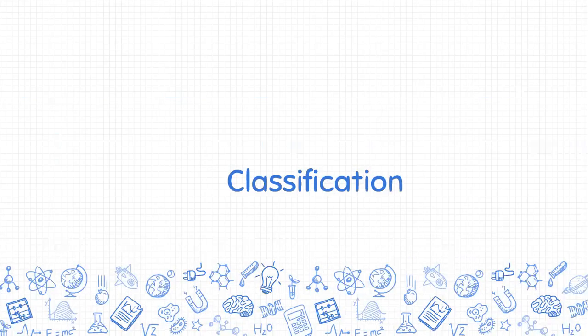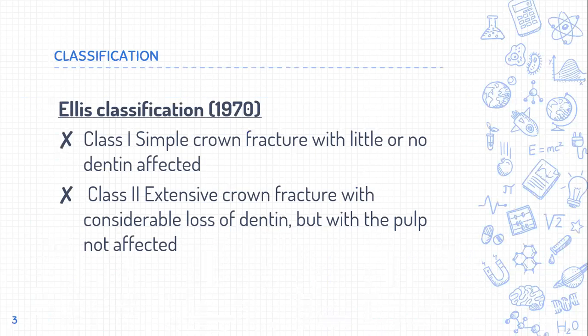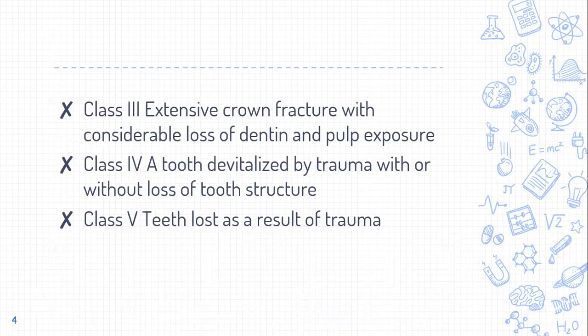One of the important classifications is given by Ellis in 1970. Class 1 is a simple crown fracture with little or no dentin affected — only enamel fracture. Class 2 is an extended crown fracture with considerable loss of dentin but without pulp exposure. Class 3 is an extensive crown fracture with considerable loss of dentin and pulp exposure — it has reached the pulp.